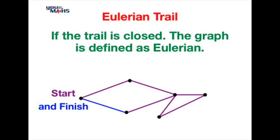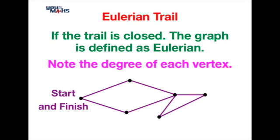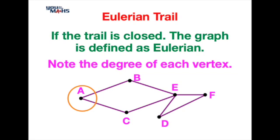There are other ways to determine the type of Eulerian Trail just by looking at the vertices. So let's consider the degree of each vertex. First of all we'll label the vertices from A through to F. When we consider the degree of a vertex, basically what we're doing is we're looking at a circle around a vertex and we're determining how many edges cut through that circle.